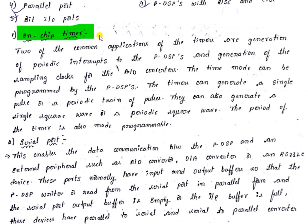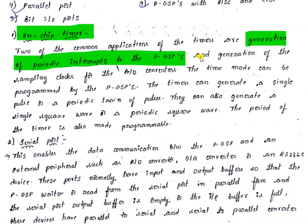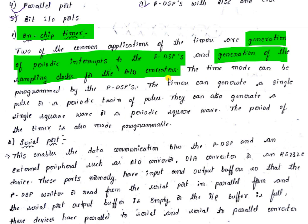The on-chip timer — every processor has a timer which provides clock pulses for executing or accessing instructions. This on-chip timer mainly provides two common applications: generation of periodic interrupts to the programmable DSPs, and generation of sampling clocks for the A2D converters.